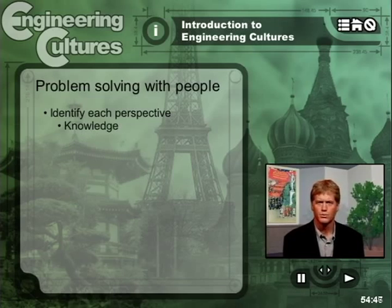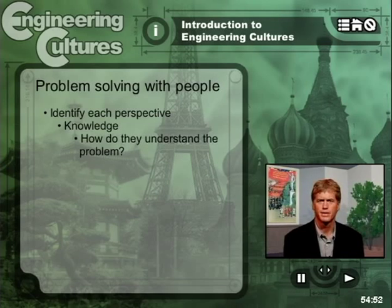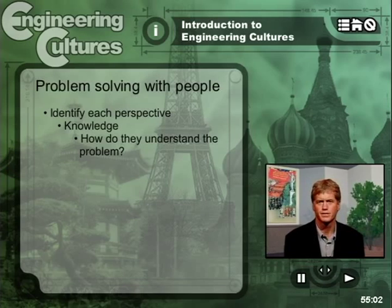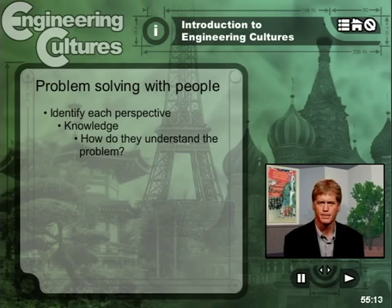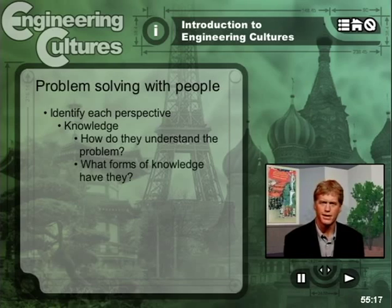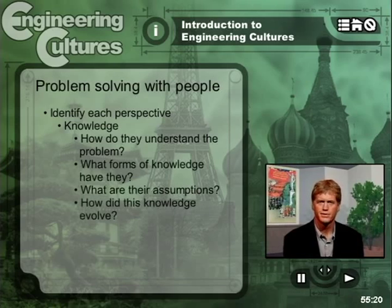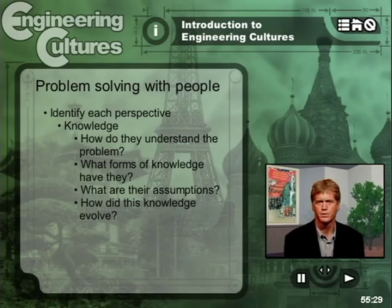Knowledge: What forms of knowledge do the representatives of each perspective have? How do they understand the problem at hand? From what sources did they gain their knowledge? By virtue of advancing our own perspectives, we are inclined to treat other perspectives as somehow fundamentally irrational. Yet at the same time, we might be dealing with people who are highly trained, have degrees, and are thinking through issues very seriously. So what forms of knowledge do they have? What are their assumptions? How did this knowledge evolve? Thus far, we have located relevant people in positions and then attempted to figure out what sorts of knowledge are built into their perspectives.